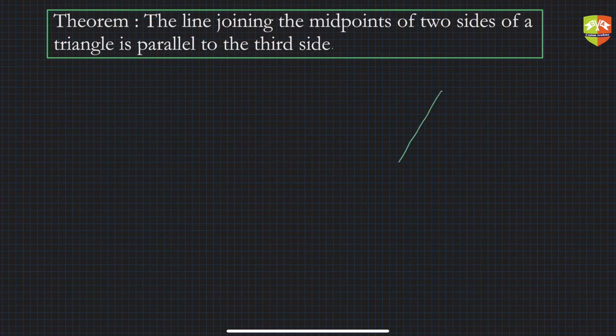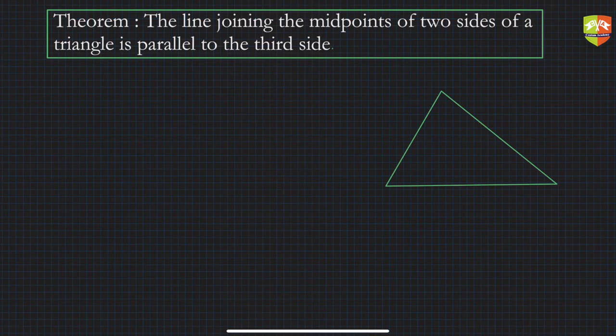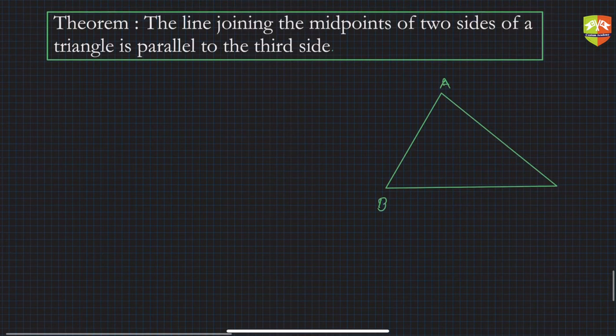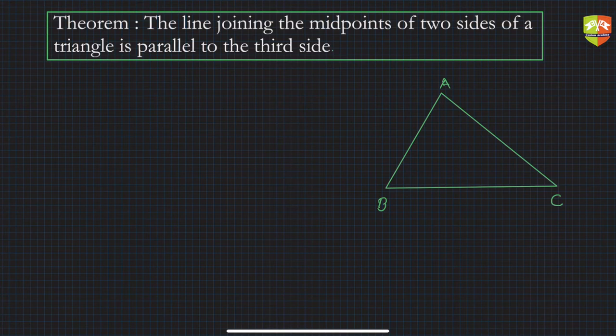So the first thing is let's draw a diagram. Here is a triangle, let us name this ABC. Now let's say point D is the midpoint of AB and point E is the midpoint of AC.